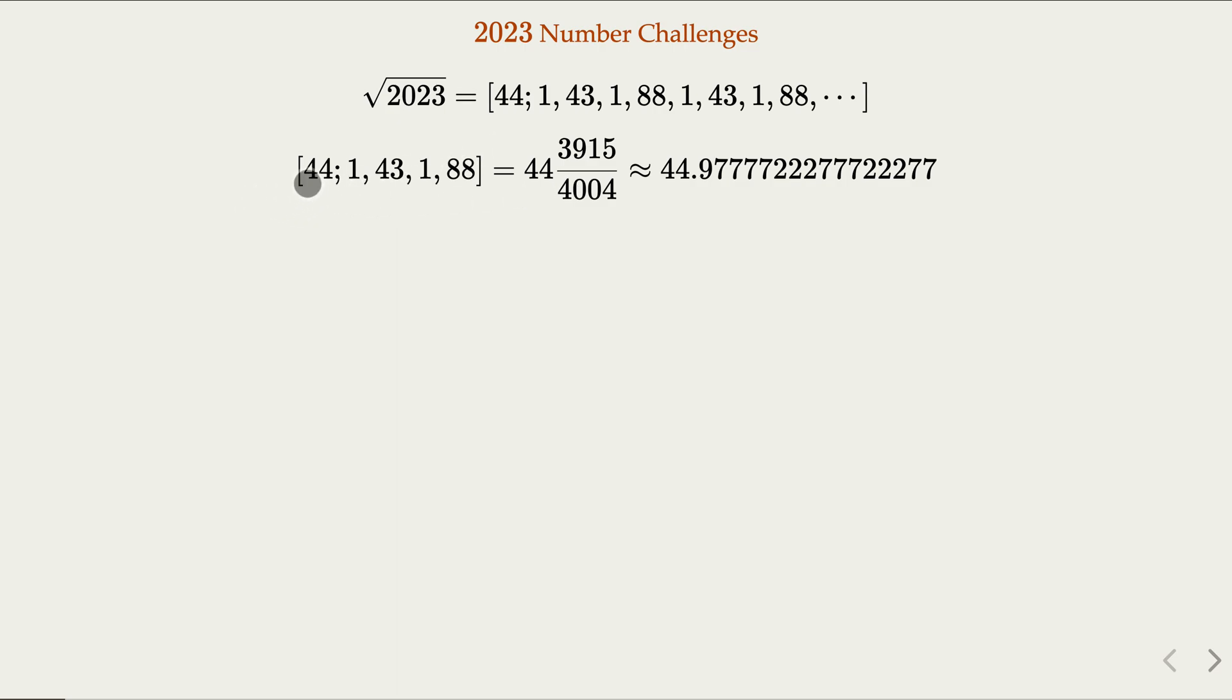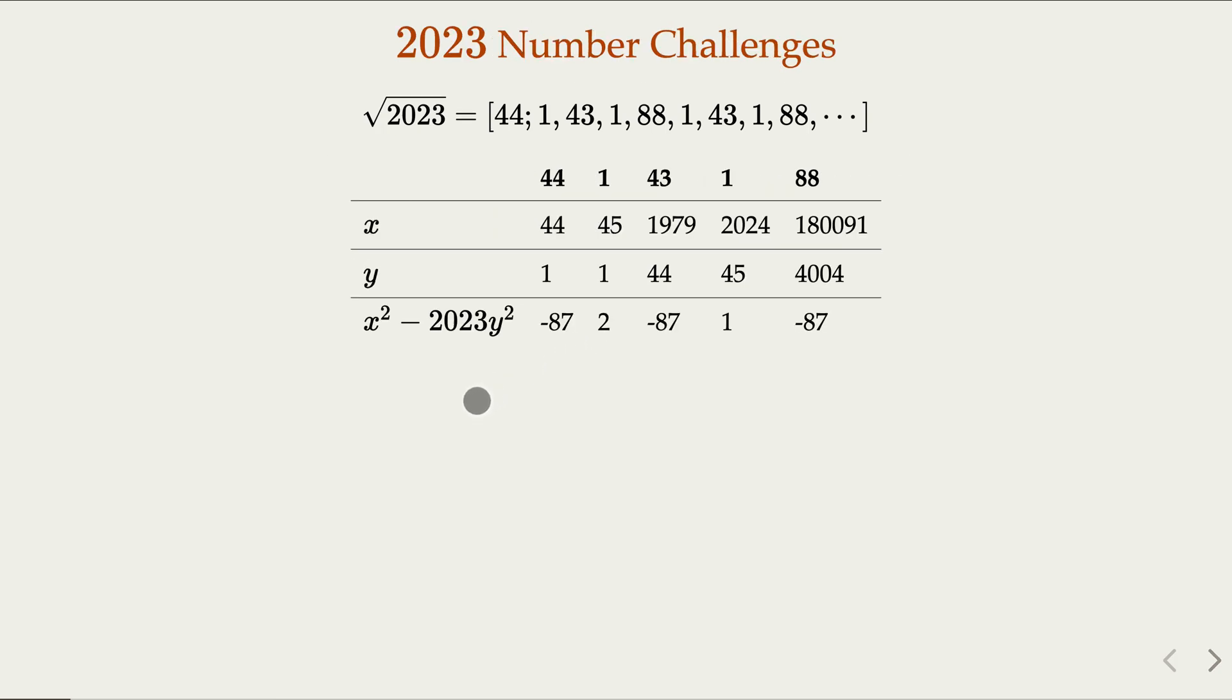When we take maybe approximation of it, taking this part, we're going to have a fraction that's really close to the true value of square root 2023. When we look at the approximation of the fraction here, when we take up to 1, we notice that x squared minus 2023 y squared becomes 1 at this point. It's negative 87, 2, negative 87, 1, negative 87.